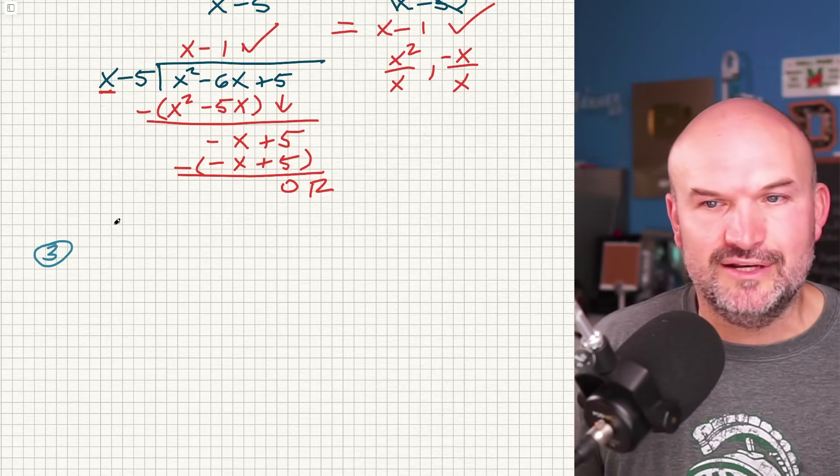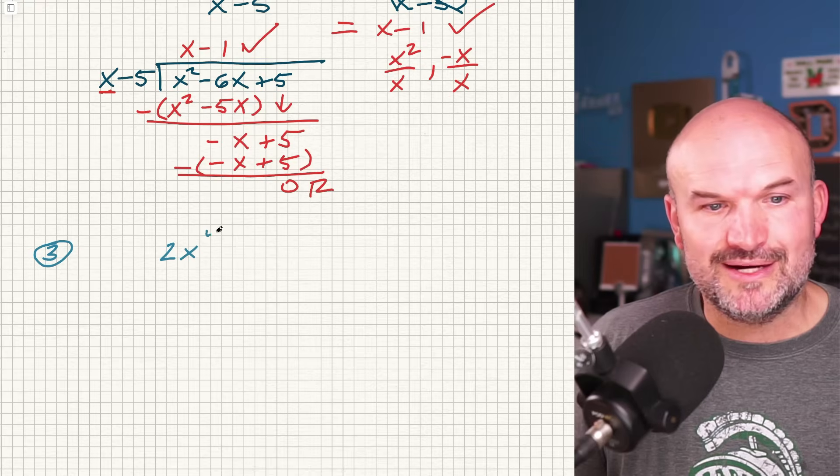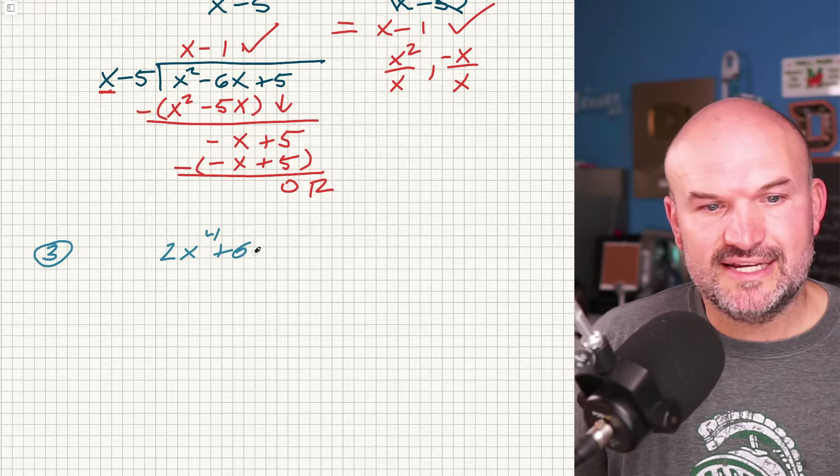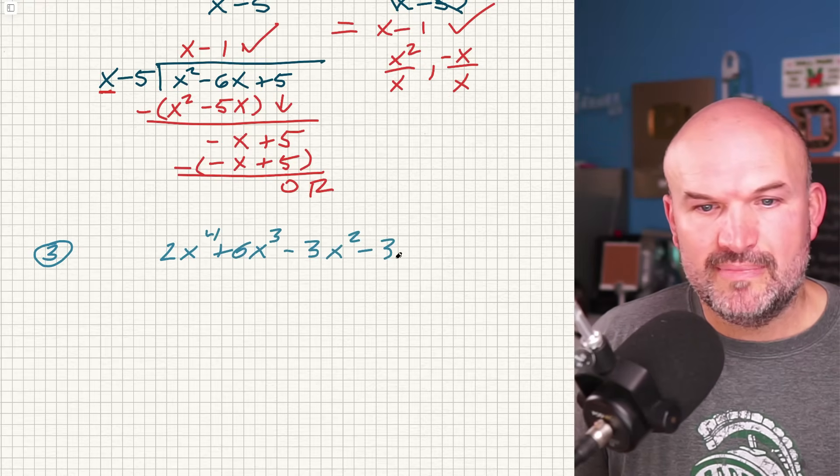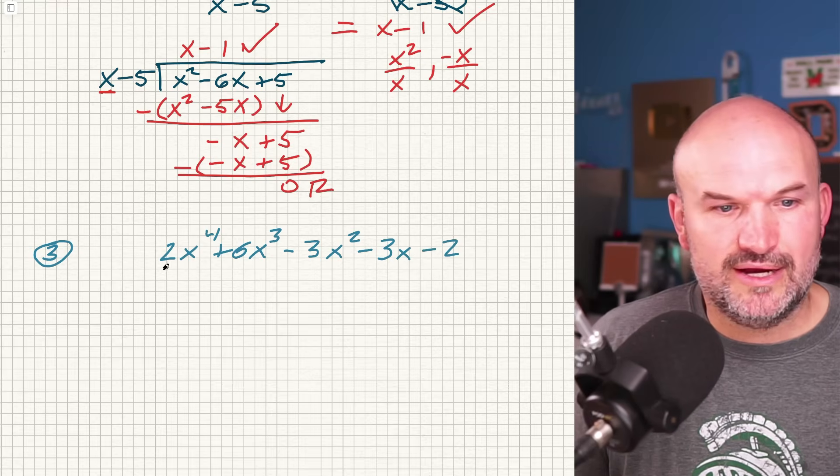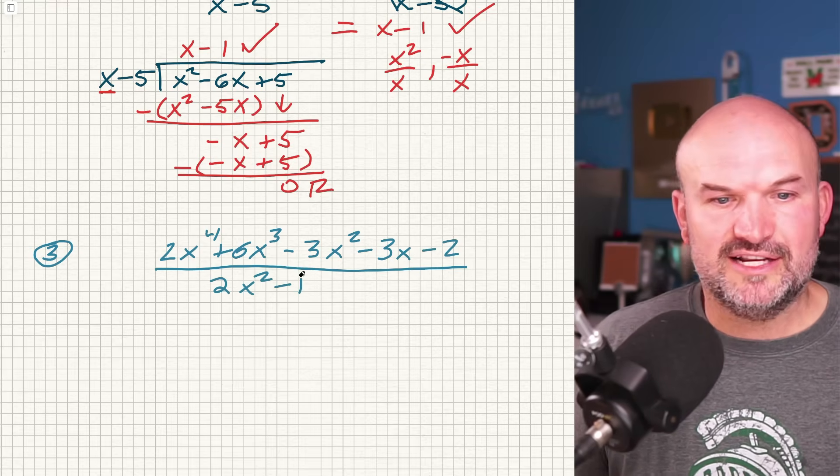We got to have some fun doing long division. So in this case, let's do something that is a little bit bigger. We have 2x to the fourth plus 6x cubed minus 3x squared minus 3x minus 2, and we're going to divide this all by 2x squared minus 1.